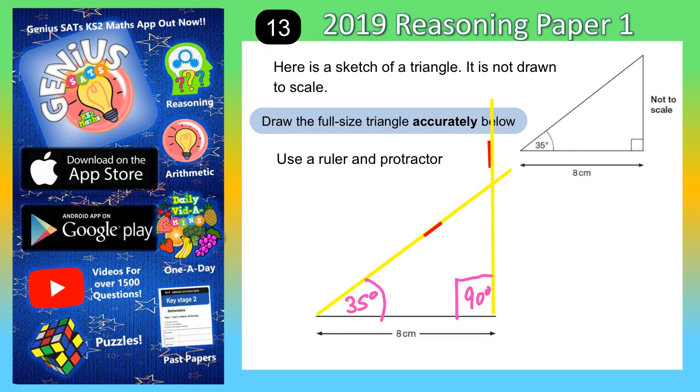And that is our finished triangle. Don't worry too much about these bits of the lines over here. They're actually a bit too long. You're not going to lose any marks just because your lines are a bit too long. What matters is that this angle down here is 35 degrees and this angle here is 90 degrees and we've definitely measured them correctly.